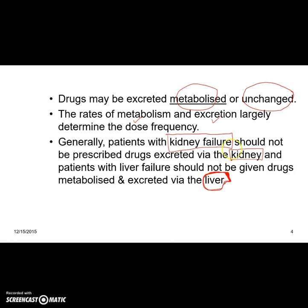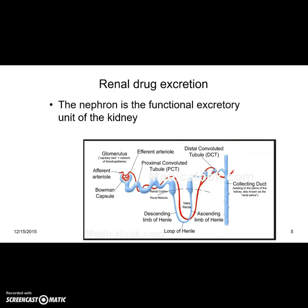When we have a limited choice of drugs, we still have to give that particular drug but we have to reduce the dose. Focusing now on renal drug excretion — there are many routes of drug excretion as mentioned, but now we focus on the renal route. The nephron, as you may remember from physiology lectures, is the functional excretory unit of the kidney.